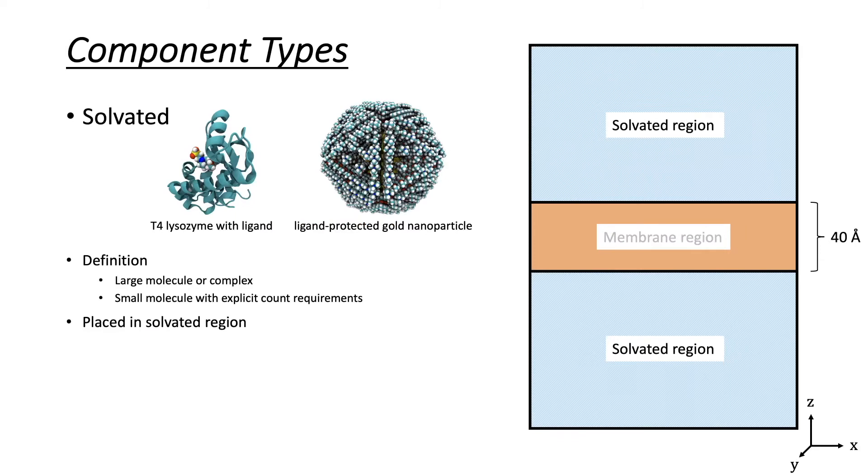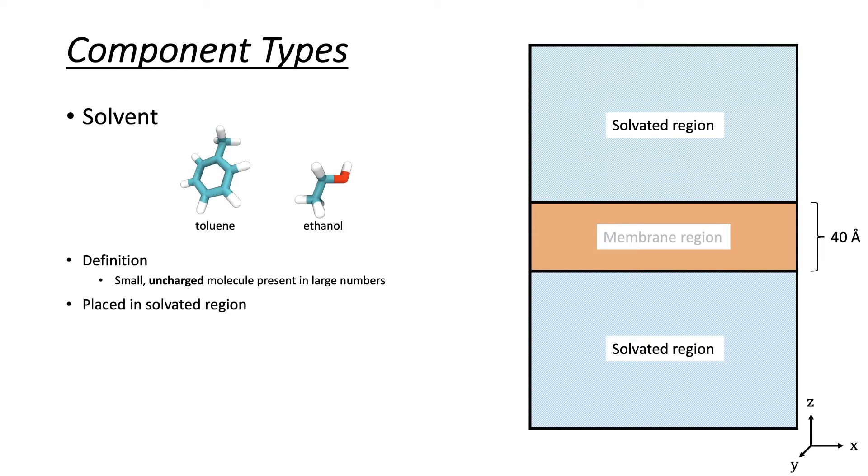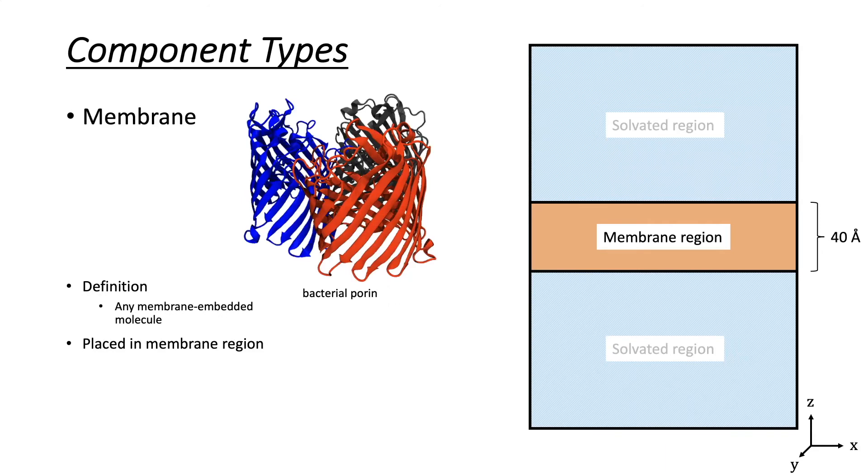Generally, a solvated component is a large molecule or complex. A solvent component is a small molecule that forms part of the solution, and an ion component is a small charged ion. A membrane component is any molecule embedded in a membrane, such as a membrane protein, nanopore, or lipid.